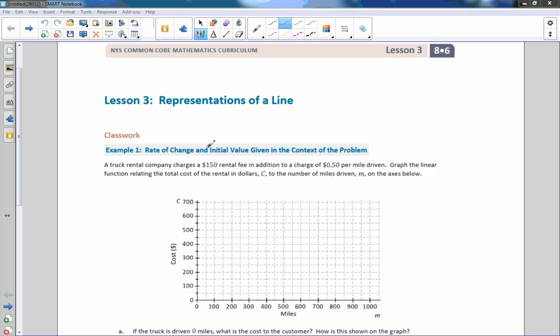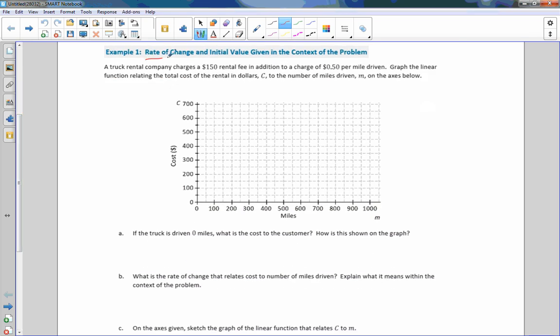Example one says rate of change and initial value given in the context of the problem. Keep in mind from the last lesson, rate of change is your slope or your m, and initial value is your y-intercept or something that occurred at zero miles or zero minutes, your starting point, and that's your b, y-intercept. A truck rental company charges a $150 rental fee in addition to a charge of 50 cents per mile driven. The word per tells us that's changing. One mile 50 cents, two miles a dollar, three miles a dollar fifty. So that is our rate of change or our slope in a line.